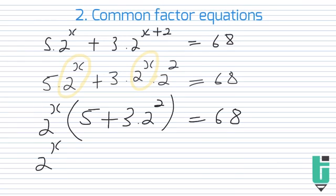And if you simplify inside the brackets, we have 5 plus 3·2^2. So 2^2 is equal to 4, 3·4 is 12, 5 plus 12 is 17. So we have 17 inside there equals 68.